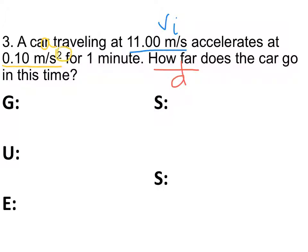Now, that 'squared' right there is part of the unit. It doesn't mean that you have to do anything to the number itself — it's part of the units for acceleration. You only square something if it's in the equation, so be really careful about the difference between a squared in the units and a squared in the equation. Also, notice we have one minute for time, but our units for velocity and acceleration are using seconds, so we can't leave this as one minute — we have to convert it to 60 seconds.